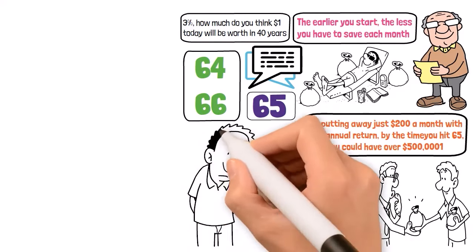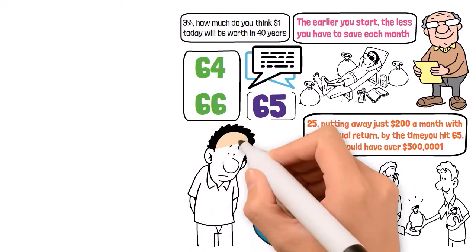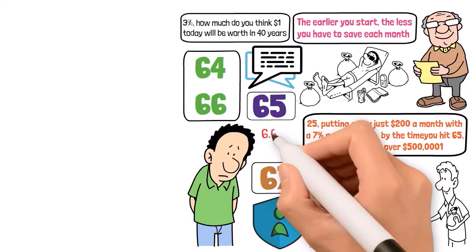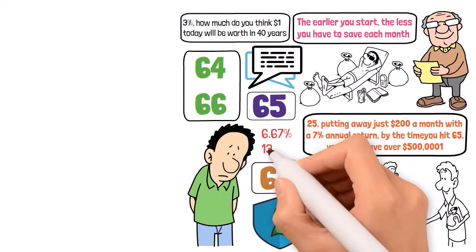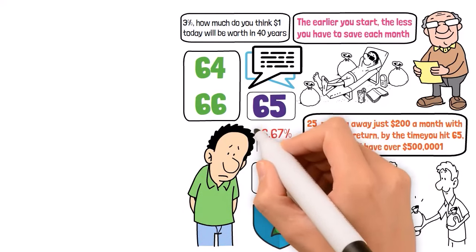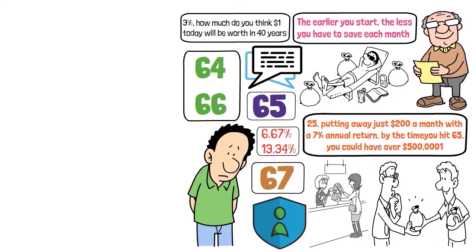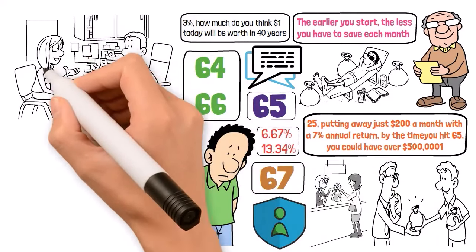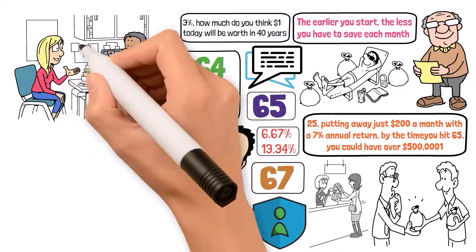For starters, claiming Social Security at 65 means you'll get reduced benefits compared to waiting until 67. We're talking about a cut between 6.67% and 13.34% depending on your birth year. And let's not forget about healthcare. Medicare kicks in at 65, but if you retire early, you'll need to bridge that gap.